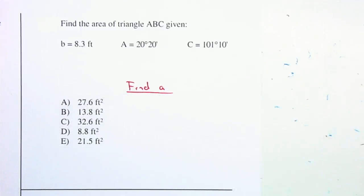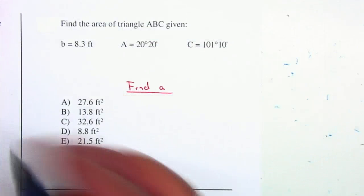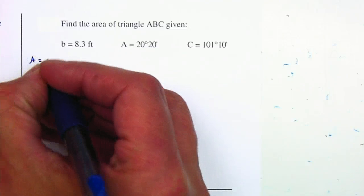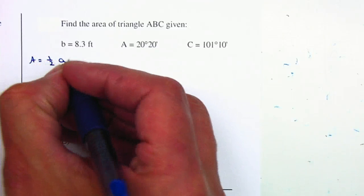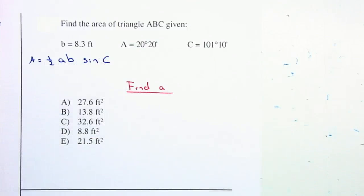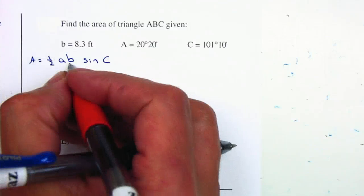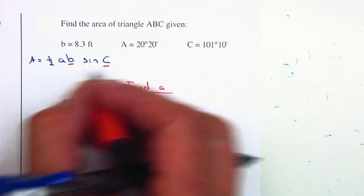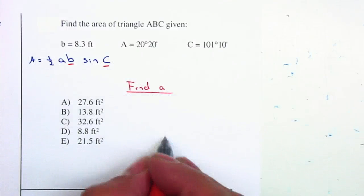Remember the area formula: area equals one half AB times sine of C. So we already have B, we already have C. Right now we're looking for side A.